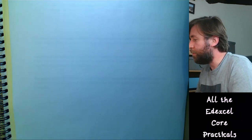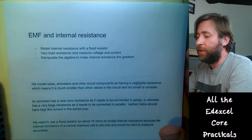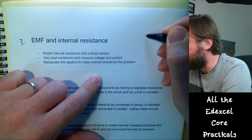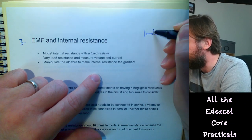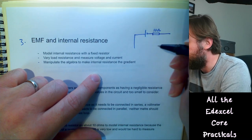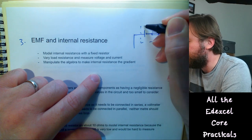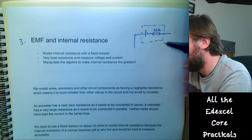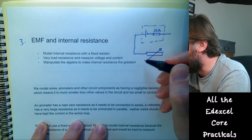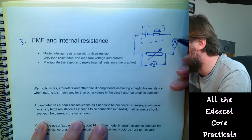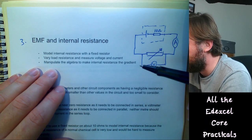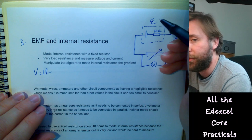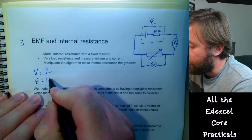Core practical 3 — EMF and internal resistance. You set up a circuit modelling internal resistance: take a normal dry cell, add a fixed resistor — typically 10 ohms — to model the internal resistance, plus a variable resistor. Measure the voltage across the load and the current through it as you vary the resistance. This is an expansion of Ohm's law: EMF = I·R_load + I·r, where r is the internal resistance.